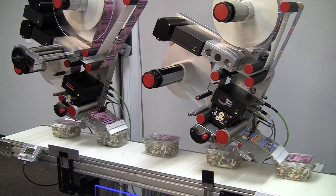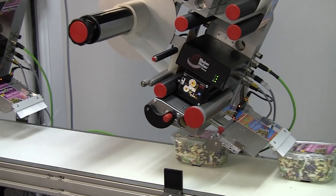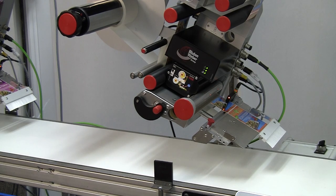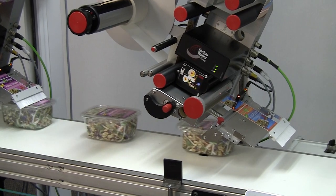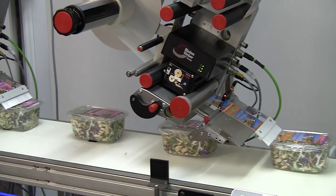So for this demonstration, I will disable the primary label applicator. As the products come through, you'll see the primary label applicator does not apply labels. There we have our secondary label applicator hitting every product.